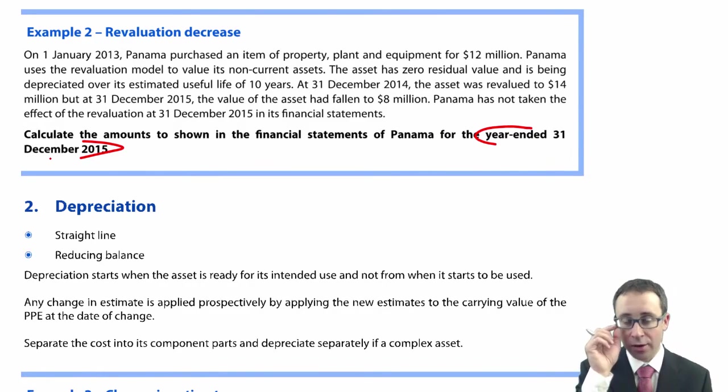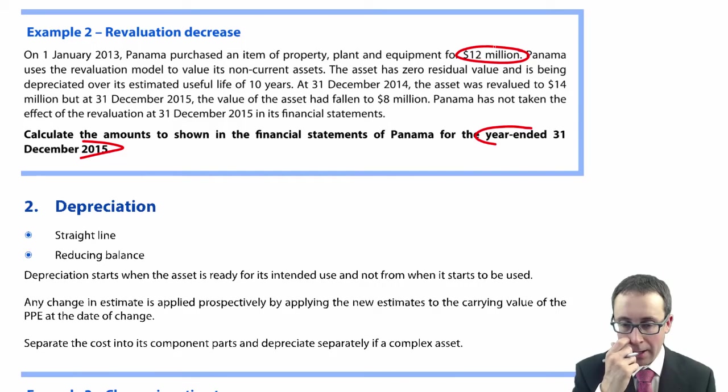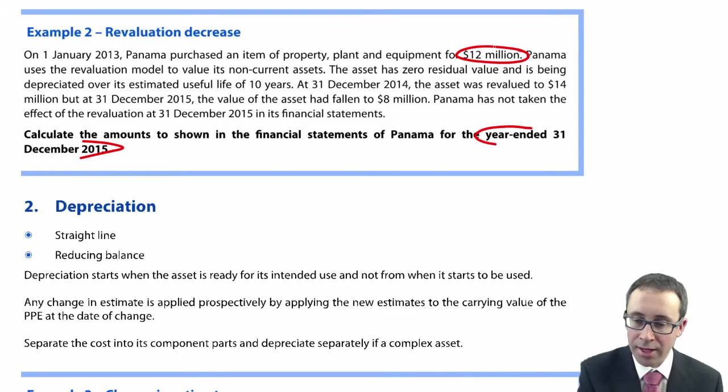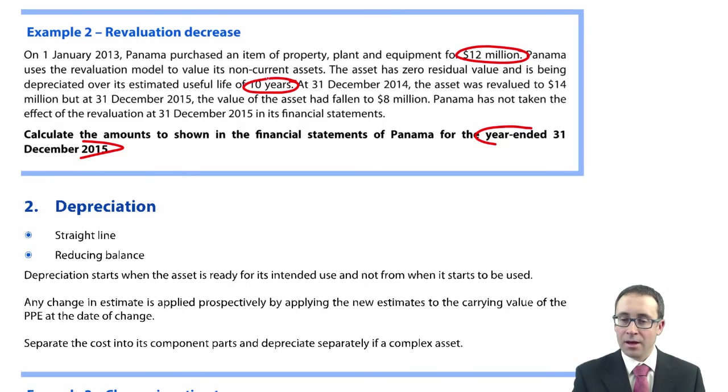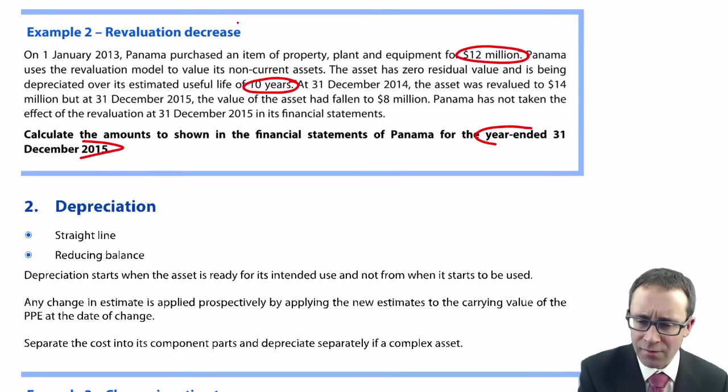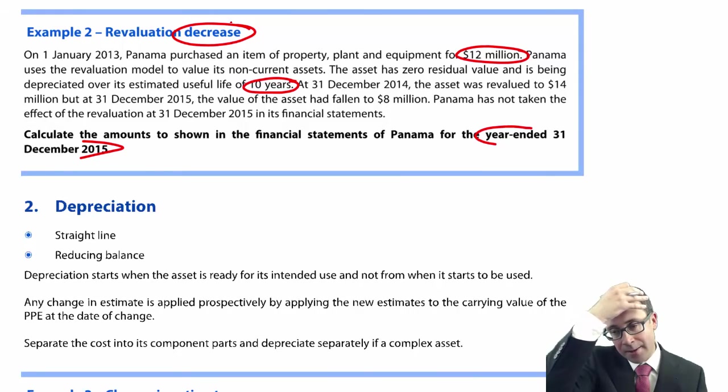On the 1st of January 2013, Panama purchased an item of property, plant and equipment for 12 million. It uses the revaluation model. The asset has zero residual value and is depreciated over 10 years. At 31st of December 2014, it was revalued to 14 million. So it looks like it's been revalued upwards. I thought we said this involved a revaluation decrease. Well, to look at the decrease, we need to look at the increase first.